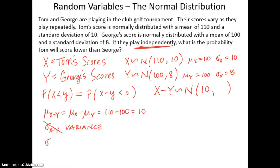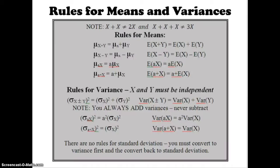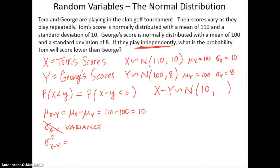So the variance of X minus Y, and we always add variances. If we look back at this slide, when we combine our variances, we always add them. So this will be, even though we're subtracting the random variables, we want the variance of X plus the variance of Y.